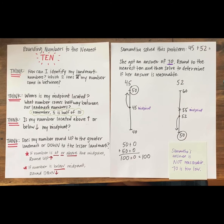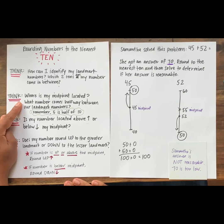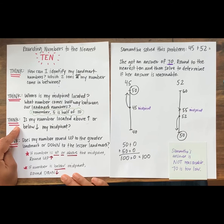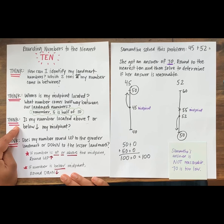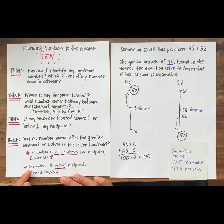Go ahead and say your answers out loud. Yes, that's right. We can identify our landmark numbers by thinking, which two multiples of 10 does my number come in between? We can locate our midpoint by thinking, what number comes halfway between our landmark numbers? We can think, is our number located above or below the midpoint? And then, based on where our number is located, we can round up or down. Remember, if the number is at or above the midpoint, we round up. And if the number is below the midpoint, we round down. Now, keep these thinking questions in mind as you practice today.